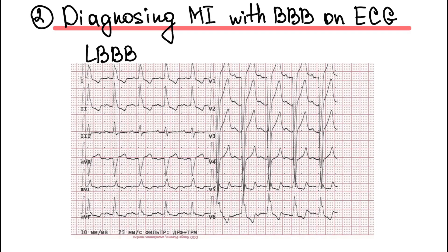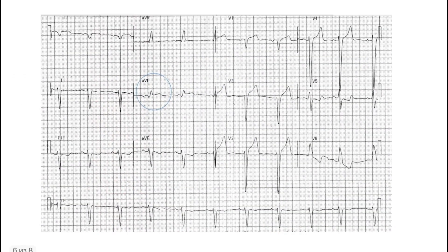Diagnosis — myocardial infarction with bundle branch block on ECG. If you have a patient with ischemia symptoms and left bundle branch block on ECG, you need to use Sgarbossa's criteria for acute coronary syndrome diagnosis. When we have left bundle branch block, we also have ST segment changes and T-wave changes, and these changes are discordant. We think about acute coronary syndrome if we have concordant ST segment changes. Patient management with ischemia symptoms and left bundle branch block is similar to acute coronary syndrome with ST segment elevation.